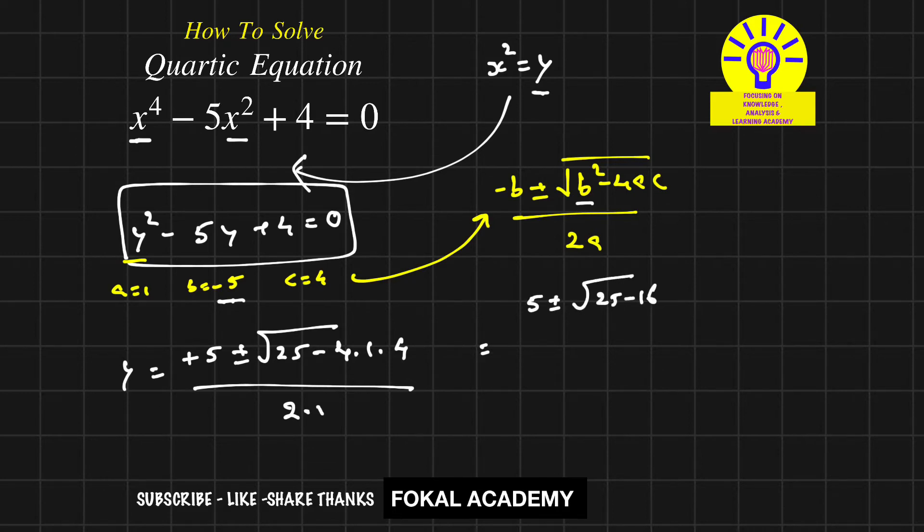This equals (5 ± √9)/2, which is (5 ± 3)/2.